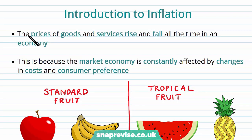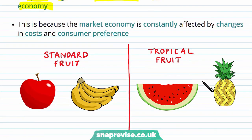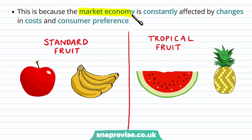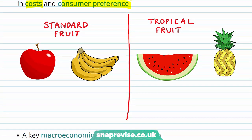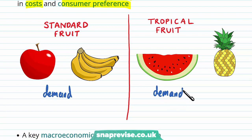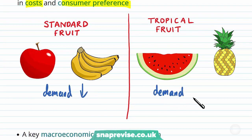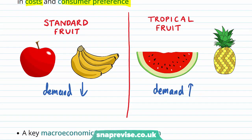The price of goods and services will rise and fall all the time within an economy, because the market economy is constantly affected by changes in costs and consumer preferences. Let's consider consumer preferences and the demand for either Standard Fruit and Tropical Fruit — let's say the demand for Standard Fruit has fallen and the demand for Tropical Fruit has risen. What will happen to the prices of these goods?